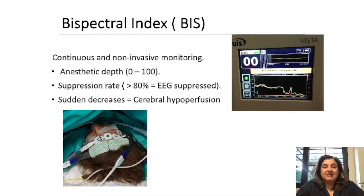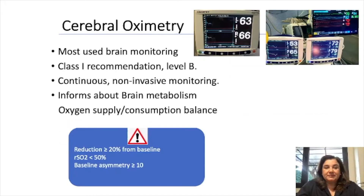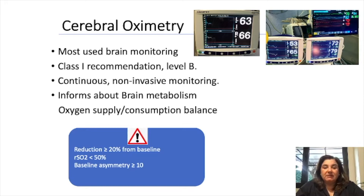A sudden decrease indicates cerebral hypoperfusion. Cerebral oximetry is the most used brain monitoring. It is a class 1 recommendation, level B — continuous and non-invasive monitoring. It informs about brain metabolism oxygen supply-consumption balance.